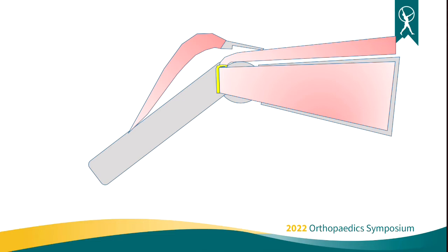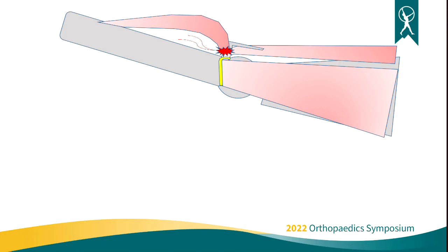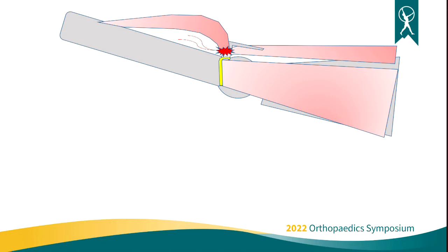As that cuff starts to get injured — whether from impingement underneath the acromion or from tendinopathy from repetitive motion — we get inflammation, and that inflammation causes pain. That's really the start of the rotator cuff pathology. Which came first, impingement or tendinopathy? You could have a debate on that, and we could talk about studies on what's causing the actual pain. But ultimately, from an orthopedic standpoint, we know that pain is coming from that rotator cuff and the inflammation in that area.